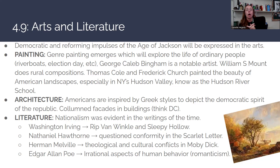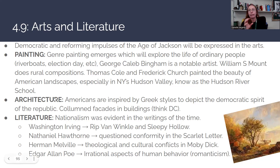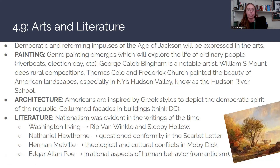For architecture, Americans are inspired by Greek styles to depict the democratic spirit of the republic. If you've ever been to Washington D.C., this is most evident — you see a lot of columned buildings like those in Greece or Rome. Think of the Capitol or the Supreme Court. That wasn't a modern form of architecture at the time, but they wanted to reflect democratic values, which is why the Supreme Court is built in that Greek style — because it has a link to the democratic ideals of ancient Greece.